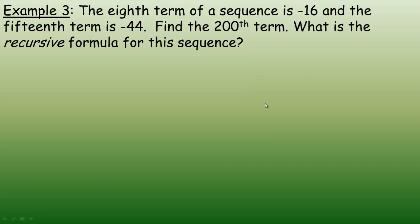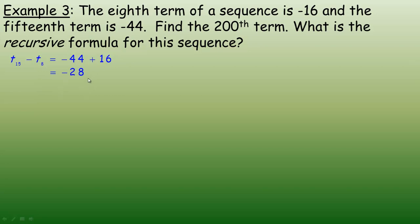In the last example, the 8th term of a sequence is negative 16 and the 15th term is negative 44, and we're asked to find the 200th term. To do that, we need to find a and d, then the general term. One way: find the difference between negative 44 and negative 16, which gives negative 28. From term 8 to term 15 is 7 steps, so there are 7 common differences. Dividing negative 28 by 7 gives a common difference of negative 4.